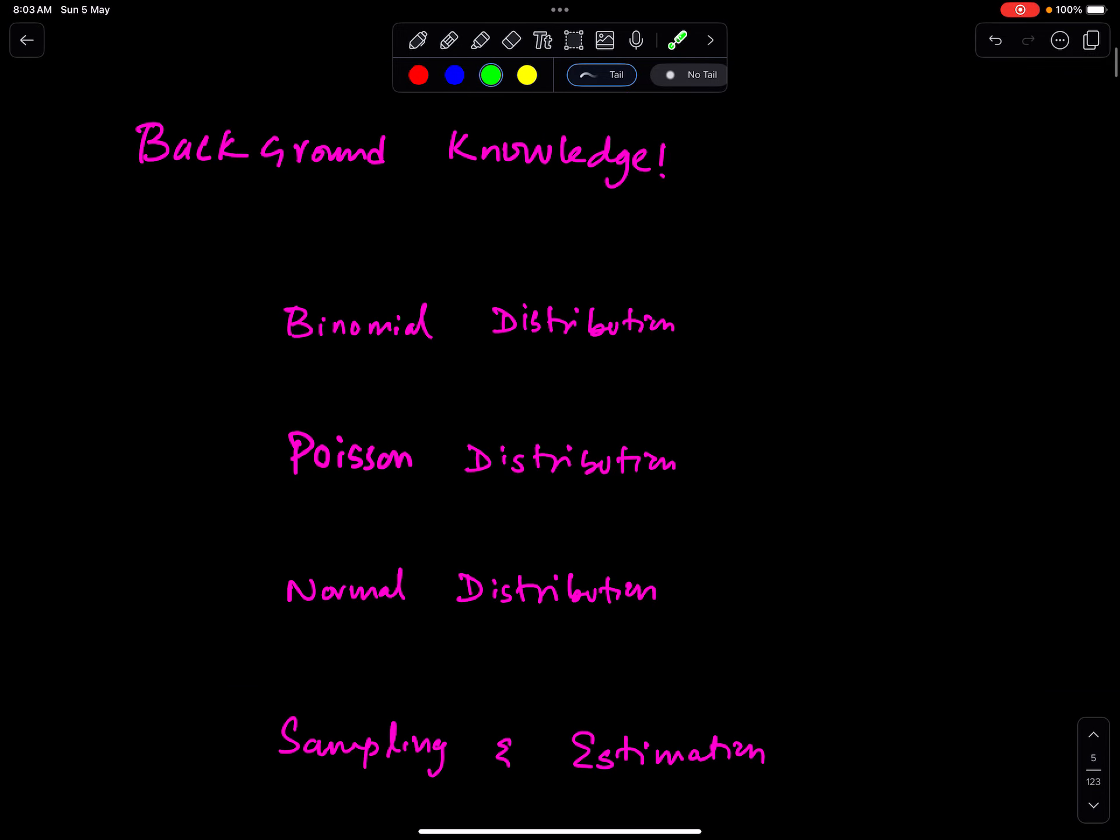The background knowledge for testing of hypothesis: to be good at testing of hypothesis, we must be good at binomial distribution, Poisson distribution, normal distribution, and sampling and estimation.